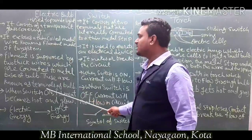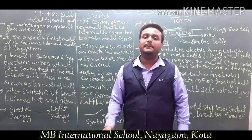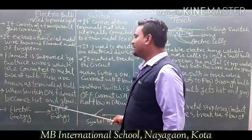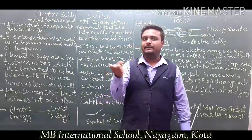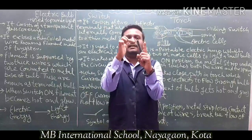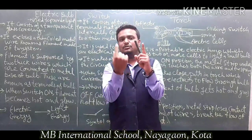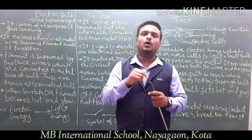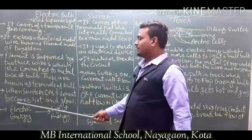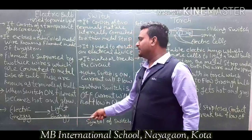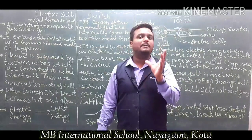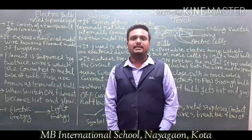These thick wires are known as terminals of the bulb. When the switch is on, the filament becomes hot and glows. The electricity flows through the circuit — from one metal wire through the other thick metal wires — completing and closing the circuit. The electric energy is converted into light energy, and the bulb glows.